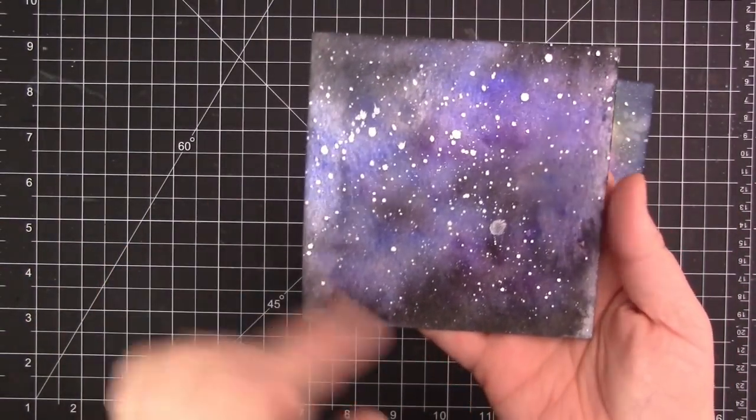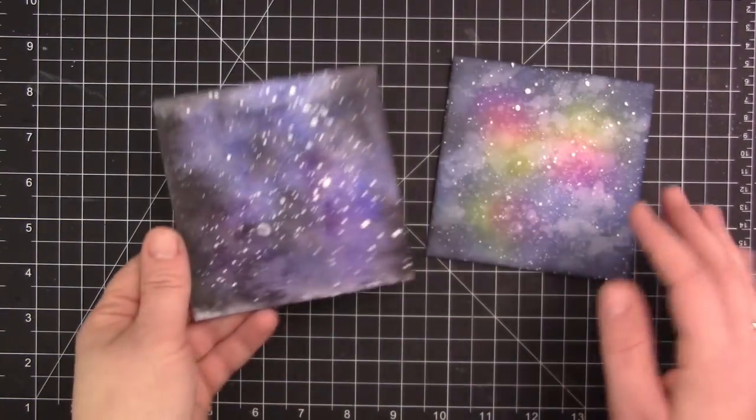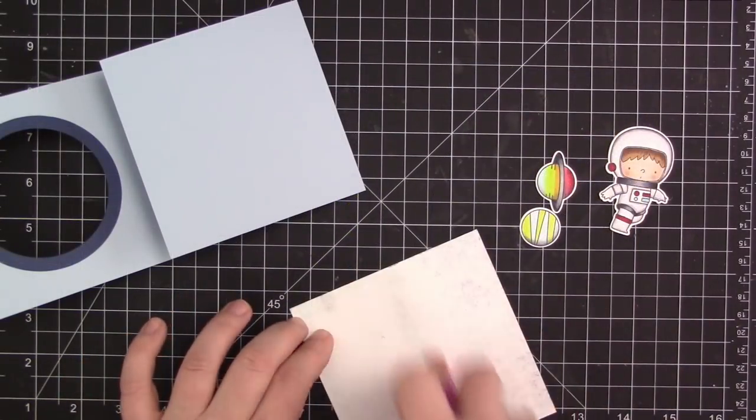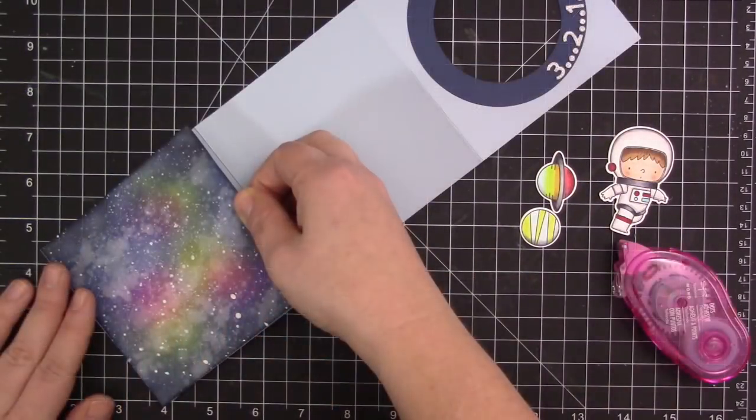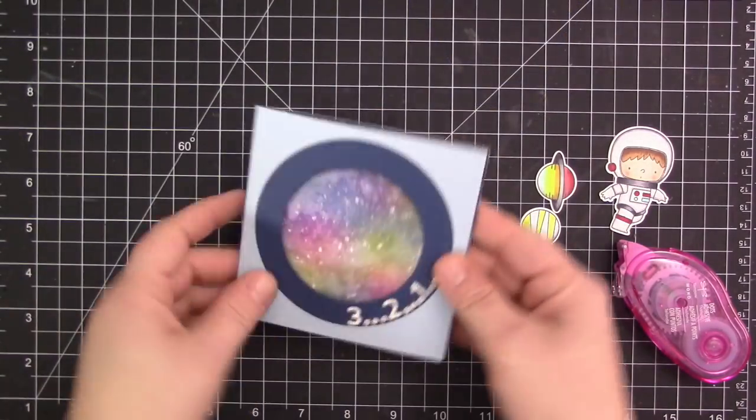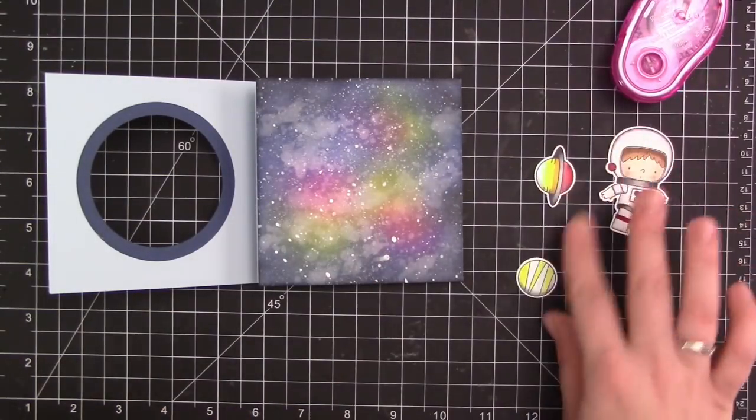And you can see there I get this really great effect because I get the large droplets and then I also get really small droplets. So you get a really nice variety of size. And because you're splattering it on, it's not any kind of specific design. So it's kind of random and it just makes it look even more realistic because it's just a random splattering of the stars. So then I went ahead and let those dry and now I can assemble the rest of the card.